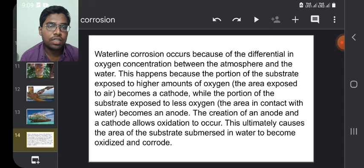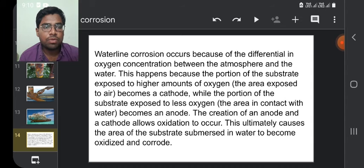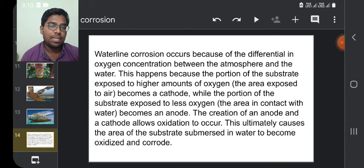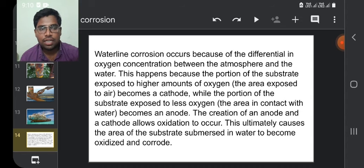Waterline corrosion occurs mainly because of differential in oxygen concentration in atmosphere and water. This happens because the portion of the substrate exposed to higher amounts of oxygen becomes a cathode, and the portion in less oxygen area, which is underwater, acts as anode. This creation of anode and cathode allows oxidation to occur. This ultimately causes the area of the substrate submerged in water to become oxidized and corroded.